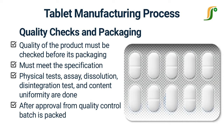After approval from quality control, the batch is transferred to the packaging area. Tablets are packed according to the requirement of the customers and are packed in blisters, strips, or in bottles. After proper packaging, tablets are shipped to the market for sale.